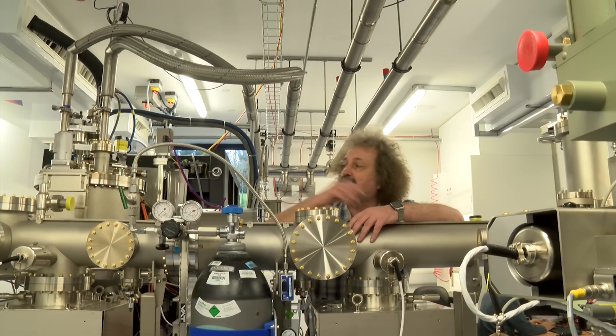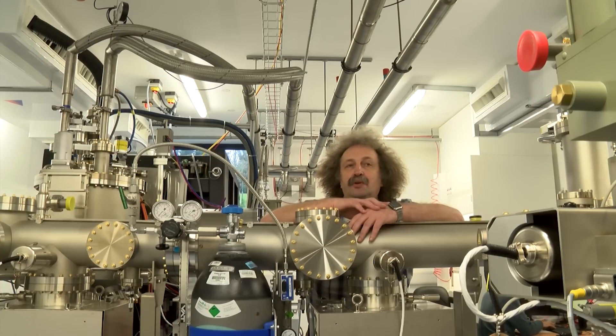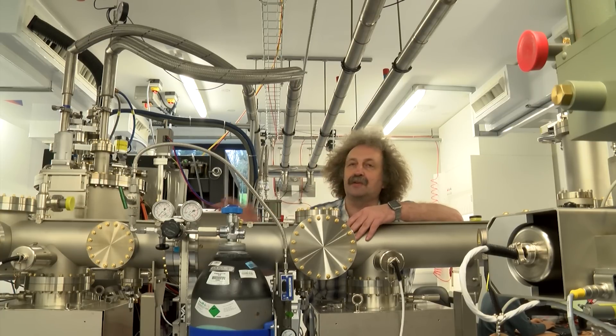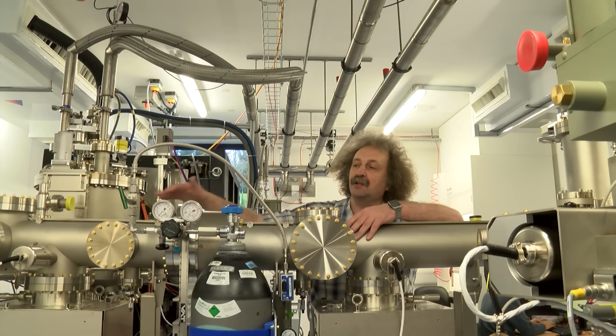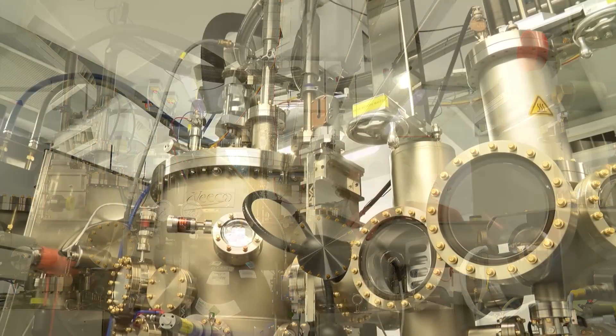We have two chambers, one for graphene, one for boron nitride, because the conditions to grow them are different. So we need to separate the growth of graphene and boron nitride. But we can channel the samples between two chambers.